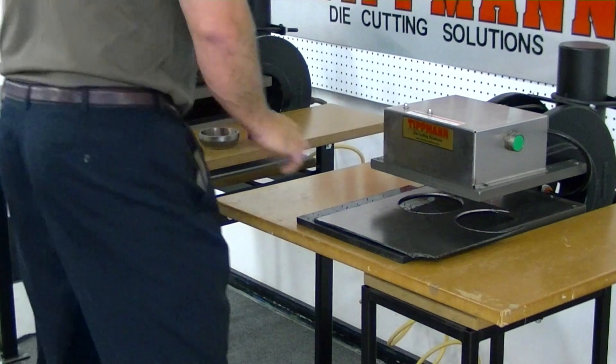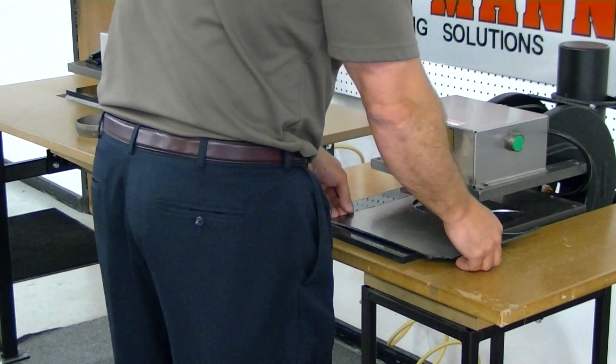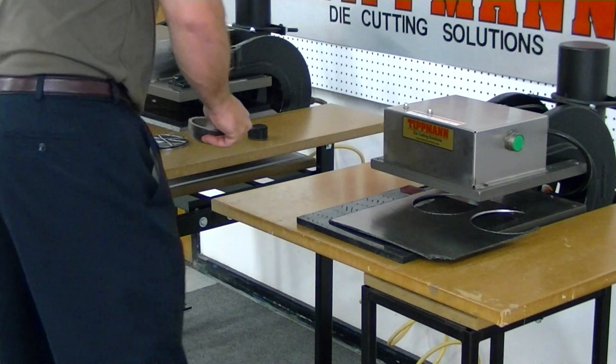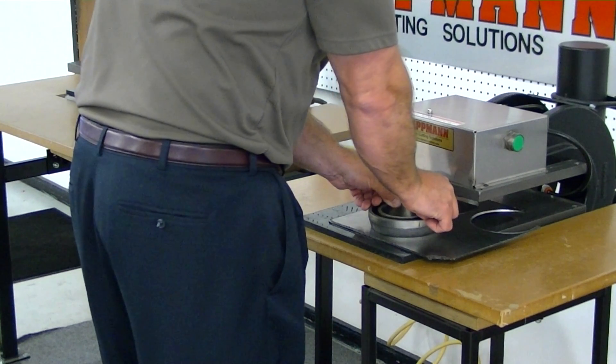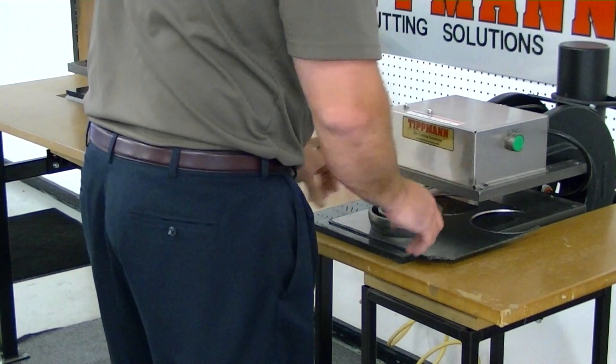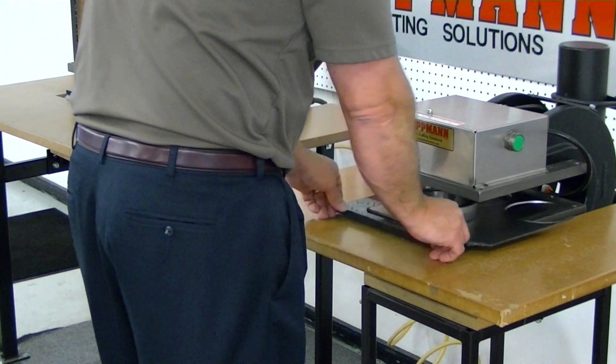Now real quick I'll demonstrate the press working. I'm going to take the two different dies and set one die on and then set the other die on. Now again, yours will be all connected together. So I'll slide everything in.